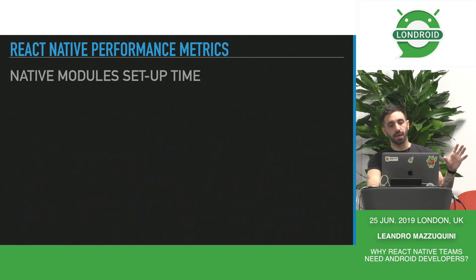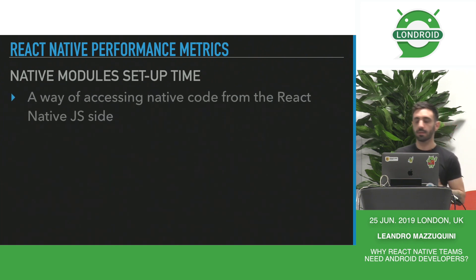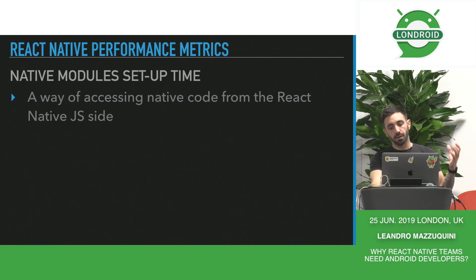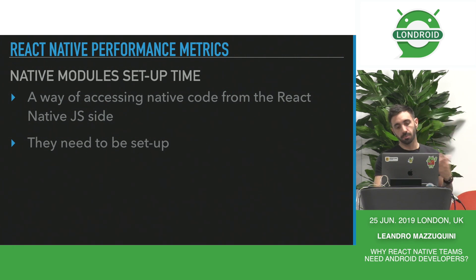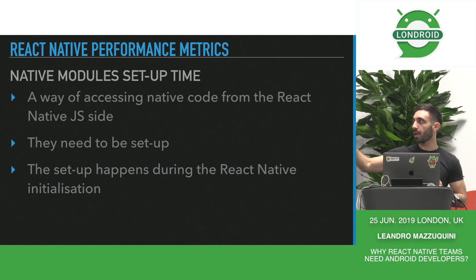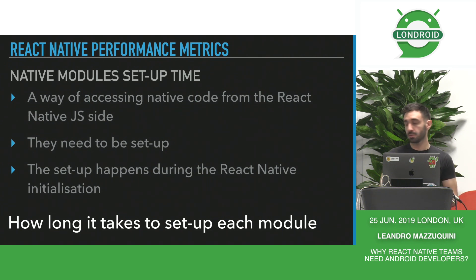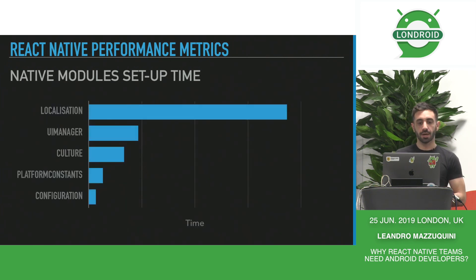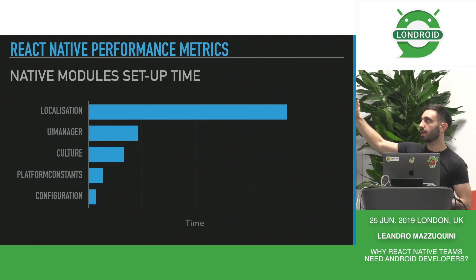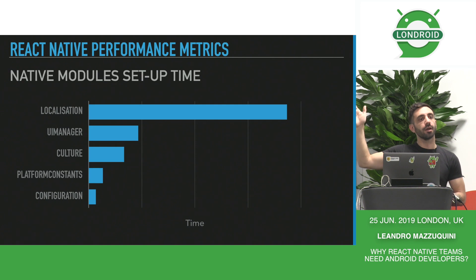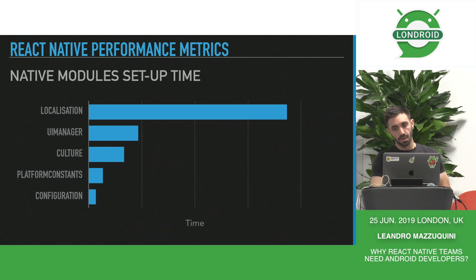What you see here is the trend line of React Native startup time across app releases — you can see it's been dropping, meaning startup time is getting faster thanks to performance work we've done. Another example is native module setup time. Native modules are a way of accessing native code from the React Native JavaScript side, and all of these modules need to be set up first. Some of them are set up during the React Native initialization, so we want to know how long each module takes. You can see, for example, that localization is taking a long time, so by using this metric we know we can optimize that native module.